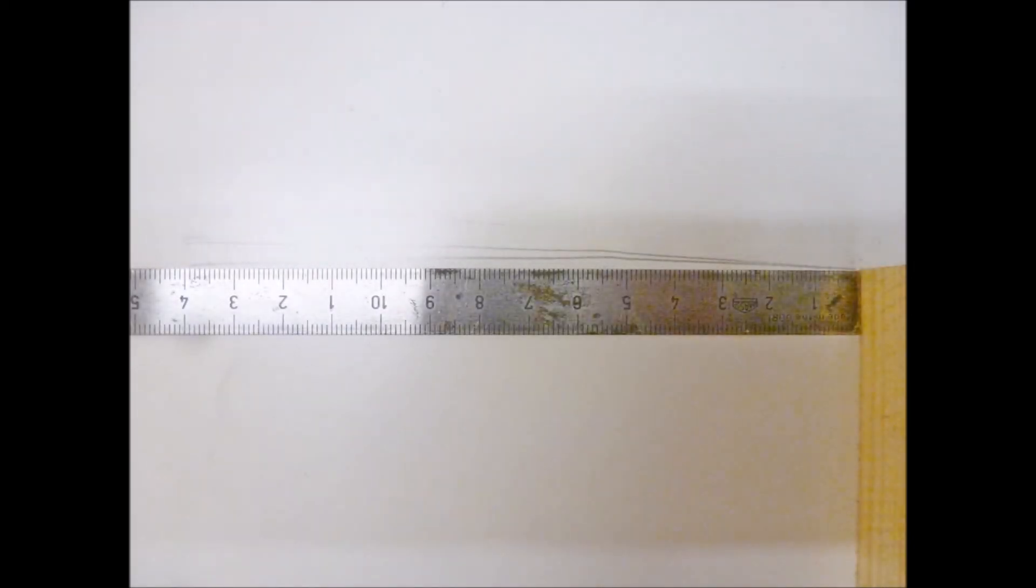In our case, the observed value of correction was more than 1mm. In other words, the string action could be easily lowered by the same amount without shaping the saddle or grinding the bridge.